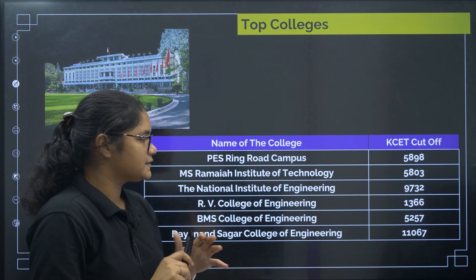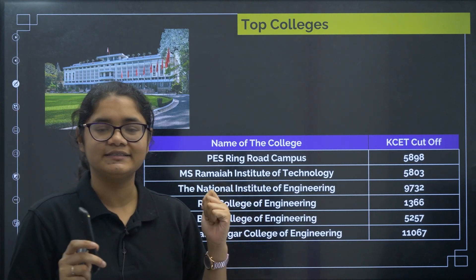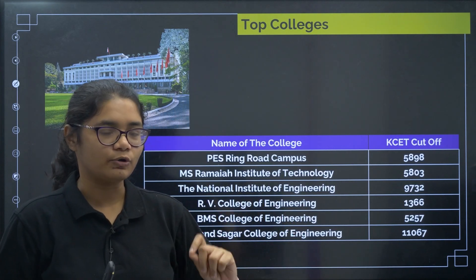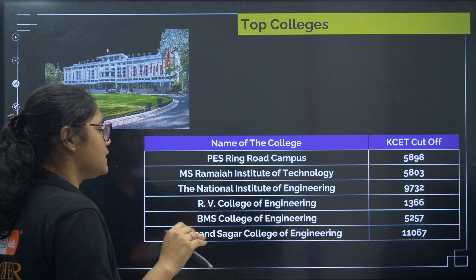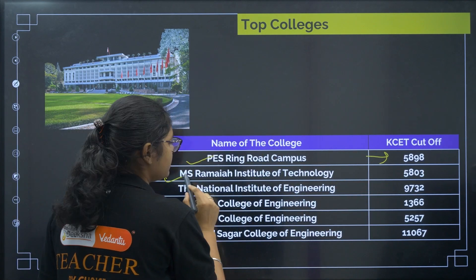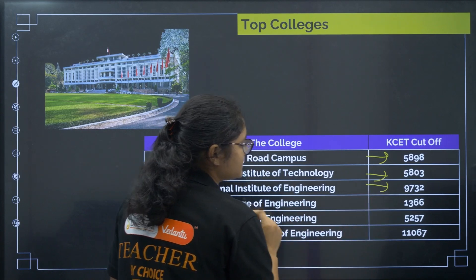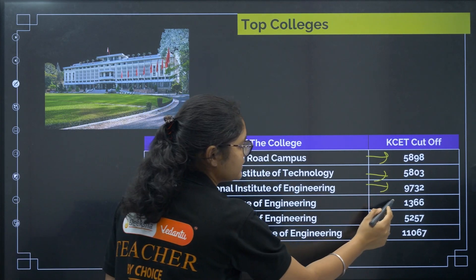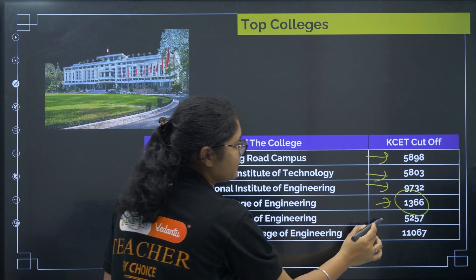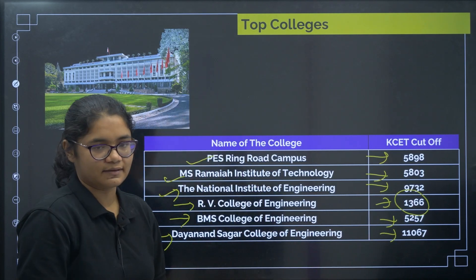Almost every college offers Electronics and Communication Engineering. You need to know the cut-offs, which are slightly high. For example: PES Ring Road — 5898, MS Ramaiah — 5803, National Institute — 9732, RV College — 13366, BMS — 5257, and Dhanasagar — around 11067.